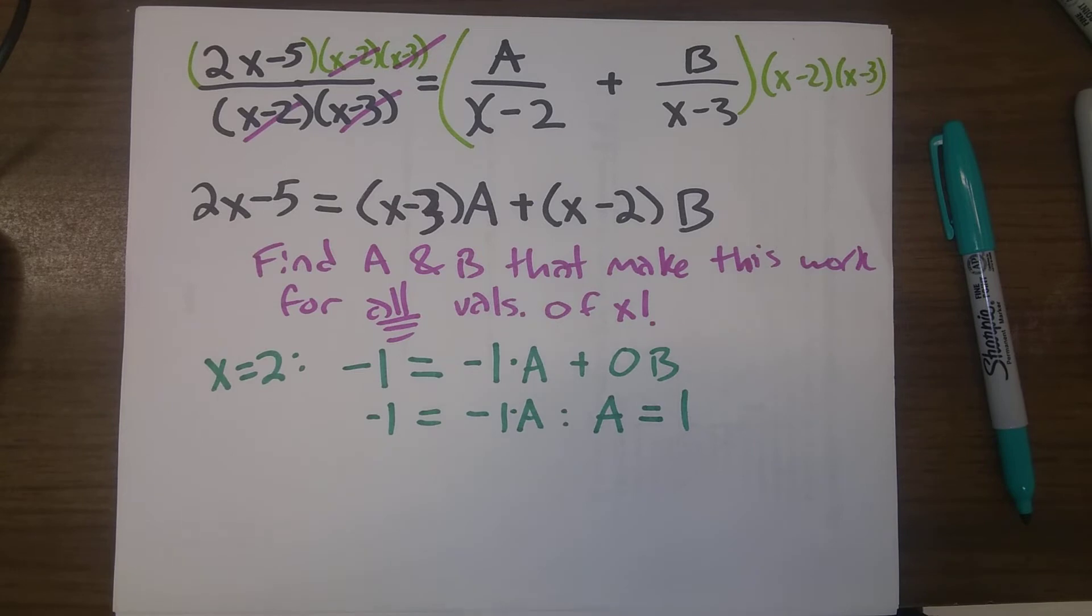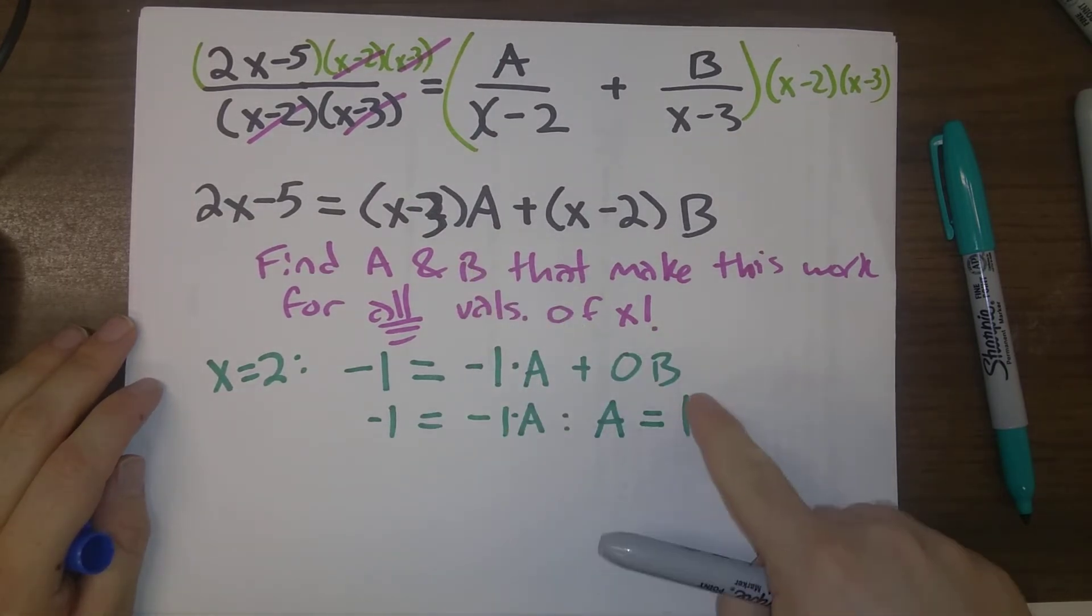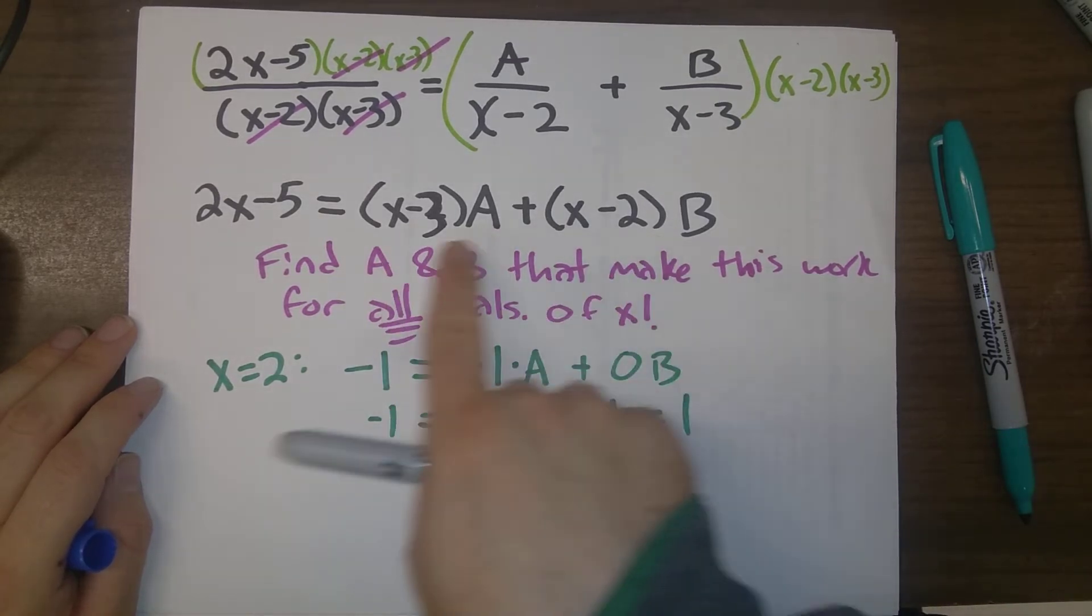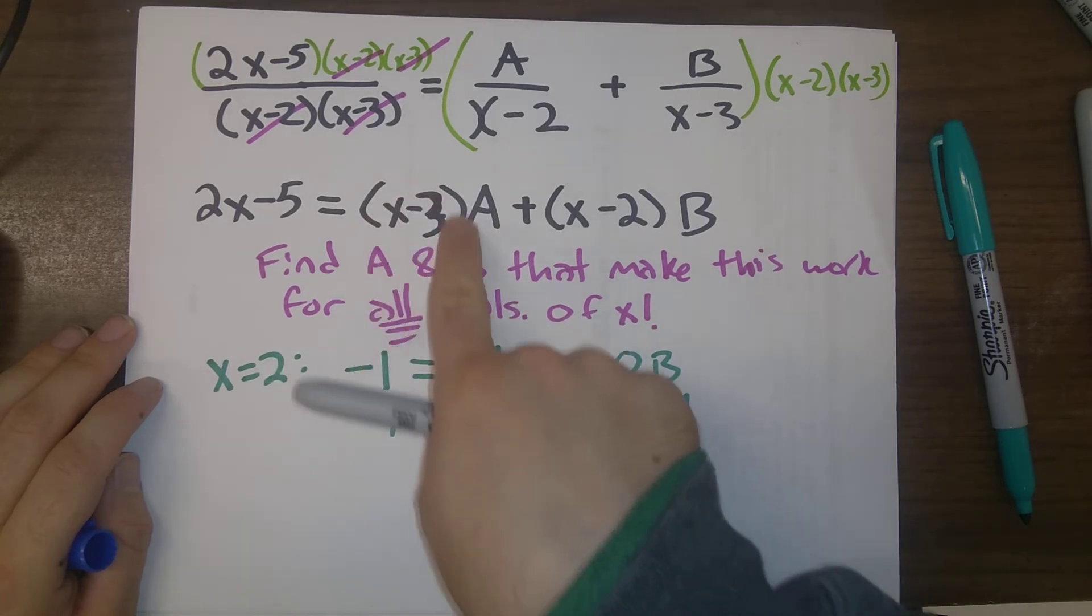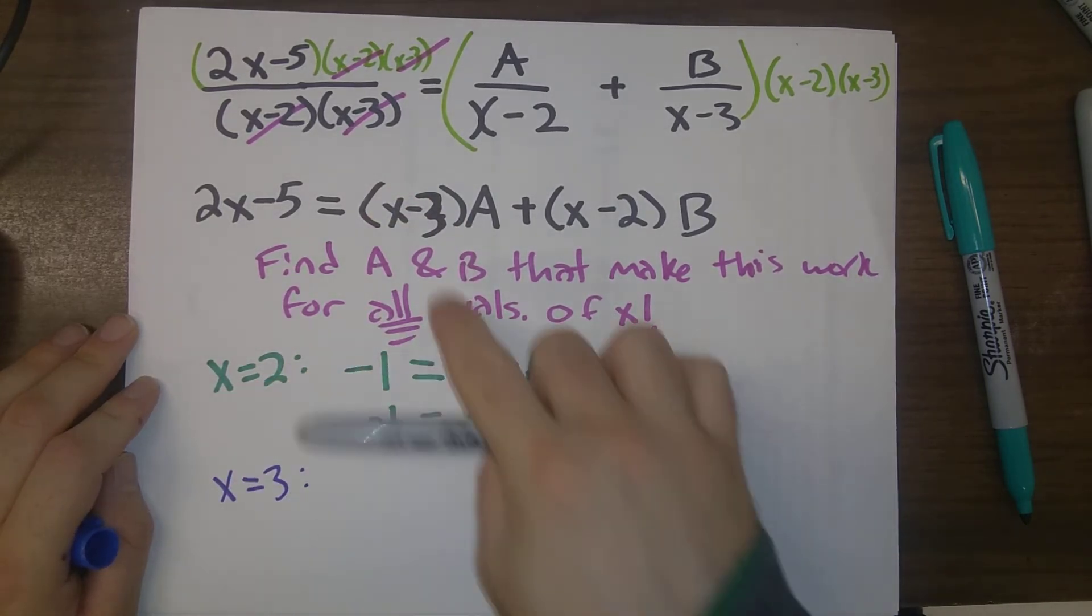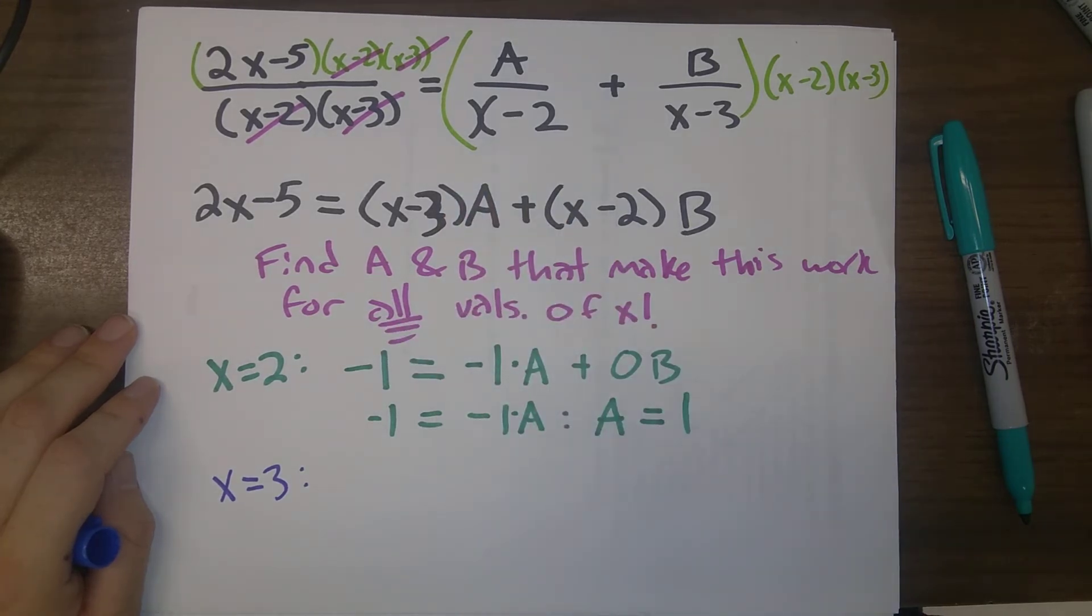Now, you should be able to spot, we're halfway done. We figured out what A is. Now we have to figure out what B is. We're going to do the same thing to figure out what B is. We plug in x equals 3 here. That will get rid of this term. We'll have an equation that only has B in it.